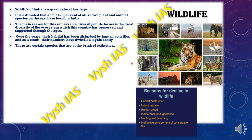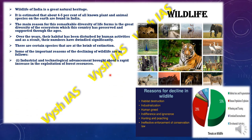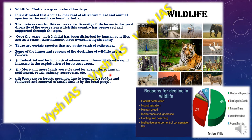The reasons for wildlife decline include habitat destruction, industrialization, human greed, indifference and ignorance, hunting and poaching, and ineffective laws regarding conservation and enforcement. Some species are on the brink of extinction. Industrial and technological advancements have brought rapid exploitation of forest resources, and more and more land has been cleared for agriculture, human settlement, roads, mining and reservoirs. There is also mounting pressure on forests for fodder, fuel wood and removal of small timber by local people living in and around forests.